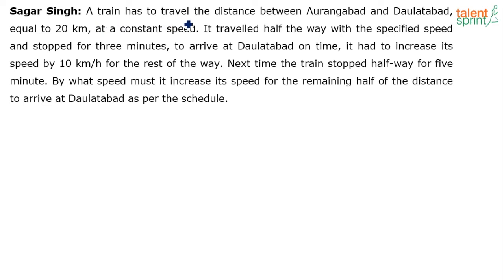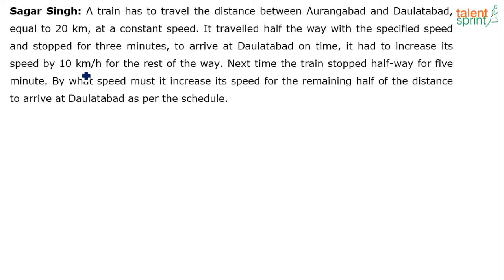A train has to travel the distance between Aurangabad and Dalatabad at a constant speed. It travelled half the way with the specified speed and stopped for 3 minutes. Now, to arrive at Dalatabad on time, it had to increase its speed by 10 km per hour for the rest of the way.